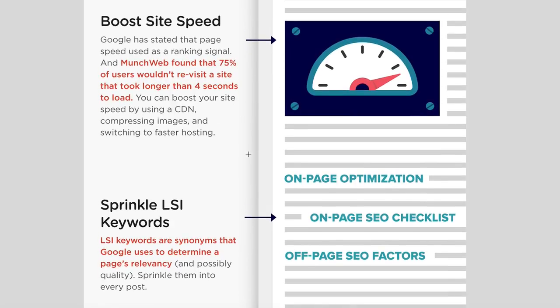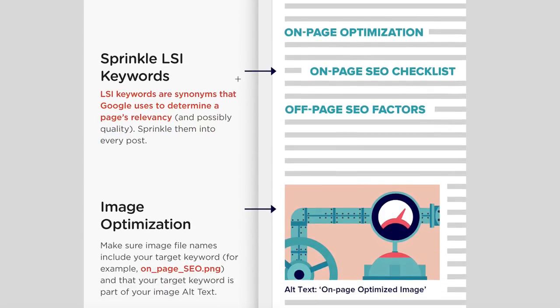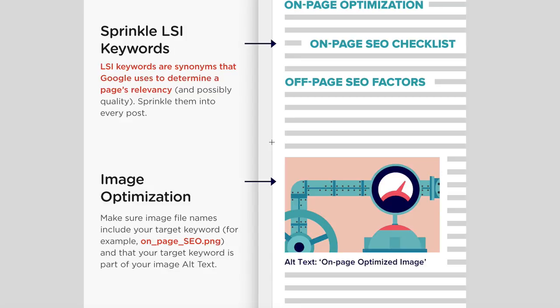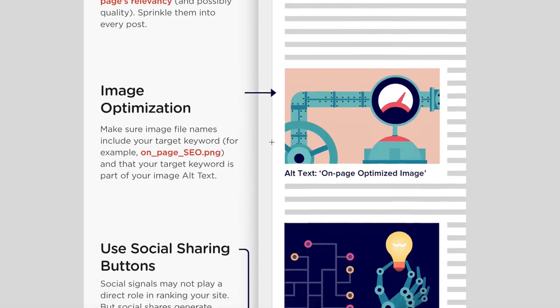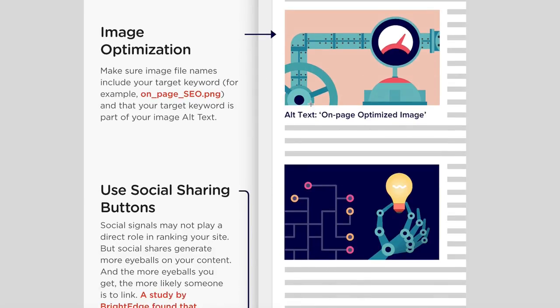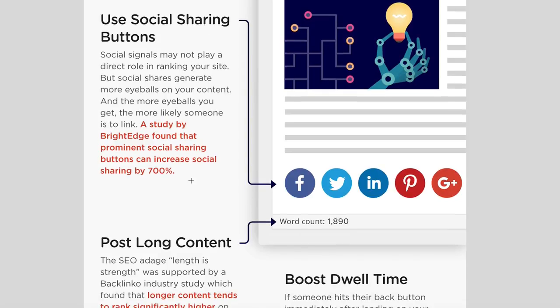Site speed is important — you want to make sure that your site loads as quickly as possible. Next tip is to sprinkle some LSI keywords, which are variations around your main keyword throughout the post. If you've got images, make sure you set a good alt tag on those images — I'm gonna show you how to do that shortly. And by adding social sharing buttons, you can increase shares, sending signals to Google that your content is good and should rank well.